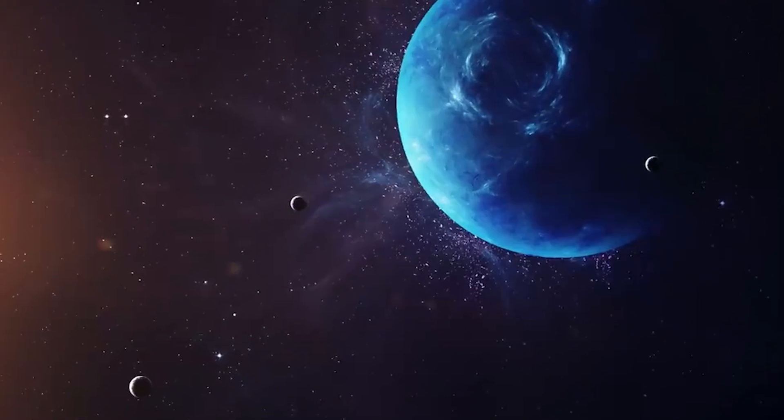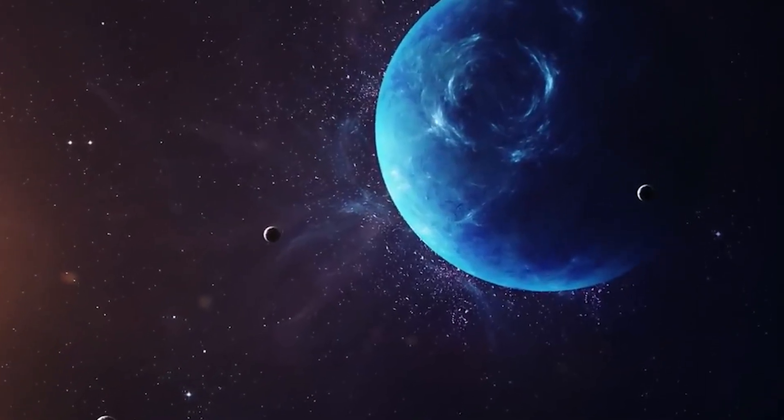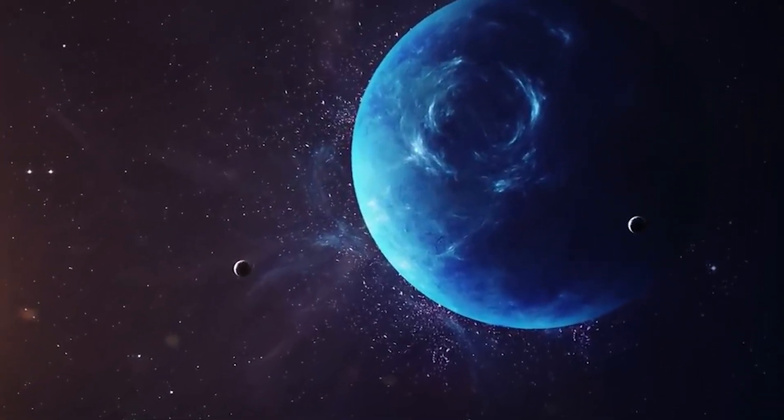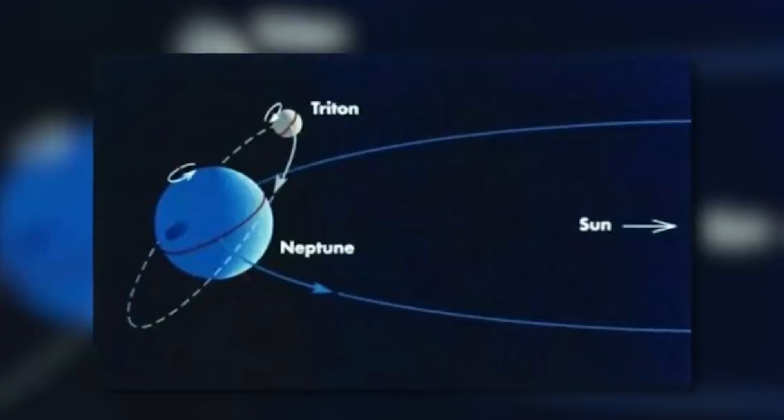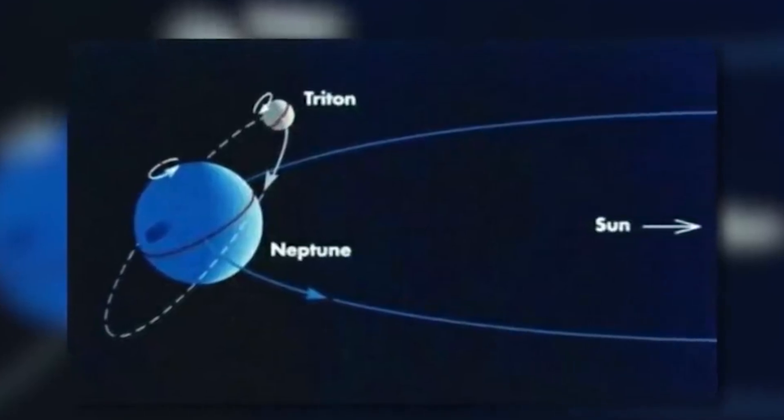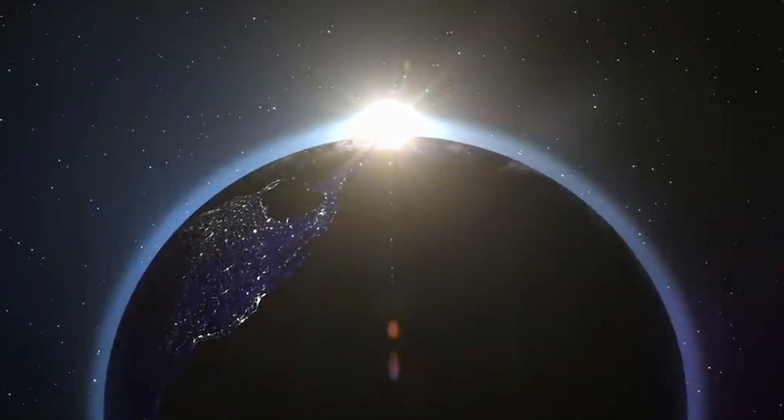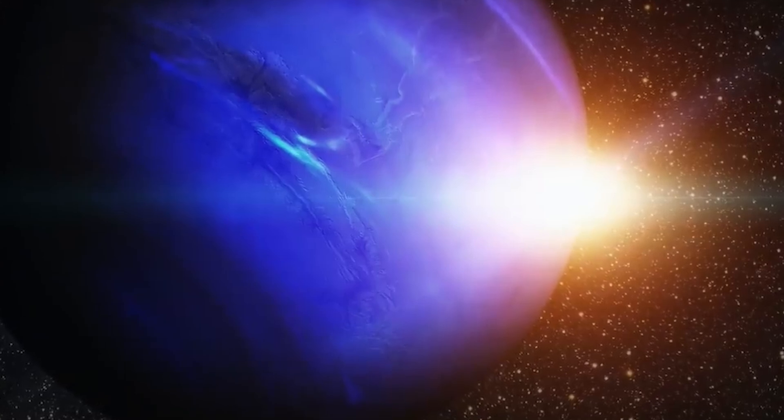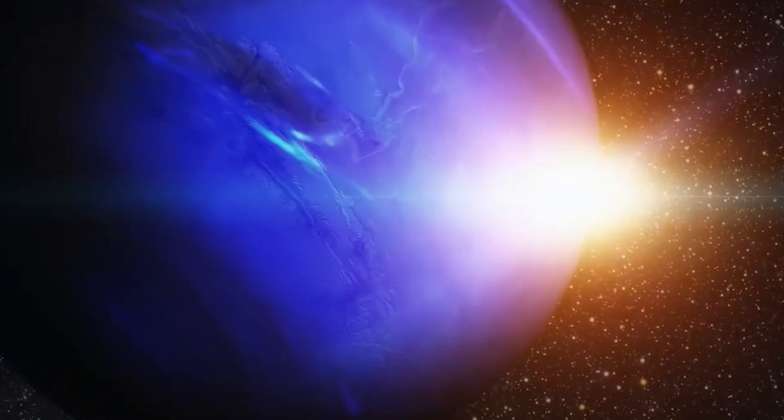The idea that Neptune has influenced the Kuiper Belt so profoundly ties into a fascinating hypothesis about its past. Many scientists believe Neptune wasn't always located where it is now. According to the migration theory, Neptune might have originally formed closer to the sun and then gradually moved outward to its current position.